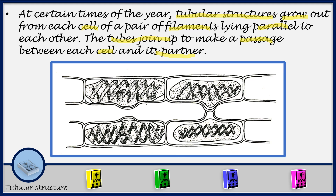So what is going to happen? We are going to have what we refer to as conjugation. If you look at one filament, this is one cell on that filament, and this is another cell on the same filament. This is the second filament with its own cells. The tubular structures grow out from each cell.